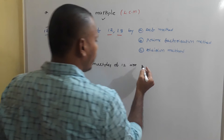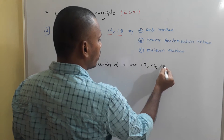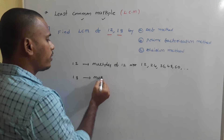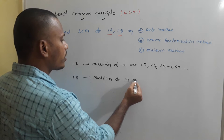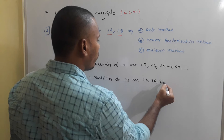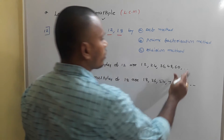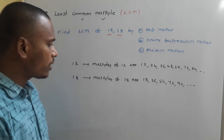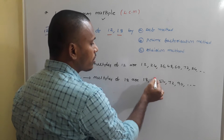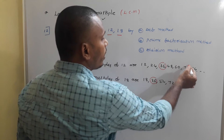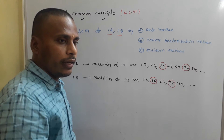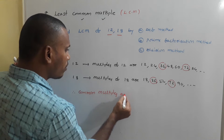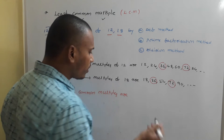Multiples of 12 are 12, 24, 36, 48, 60 and so on. Multiples of 18 are 18, 36, 54, 72, 90 and so on. Now the common multiples: 36 is a common multiple for both 12 and 18, and 72 is also a common multiple for both 12 and 18. Therefore, common multiples are 36, 72 and so on.